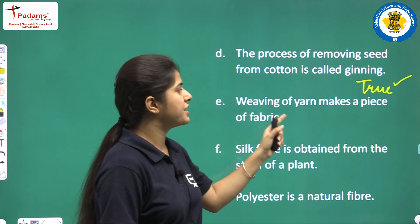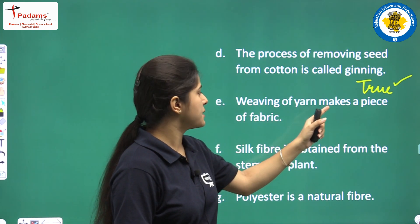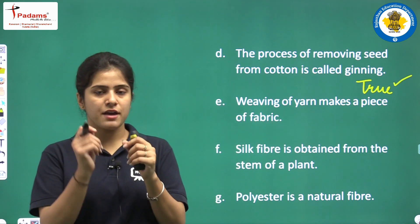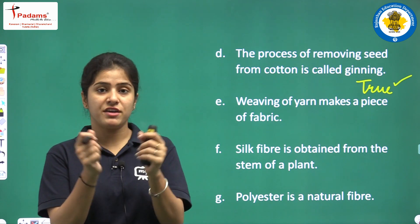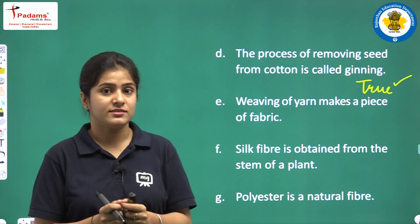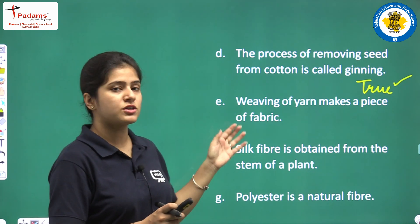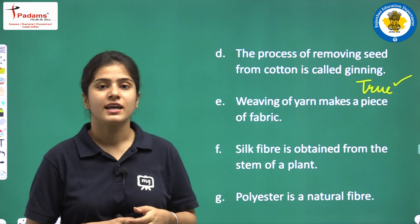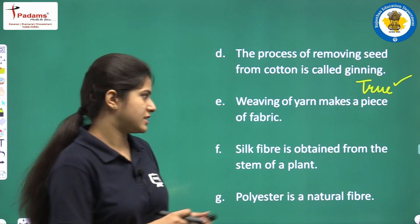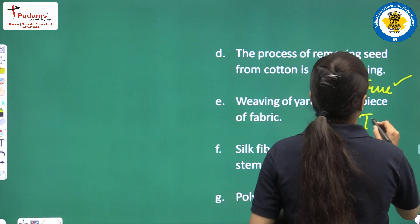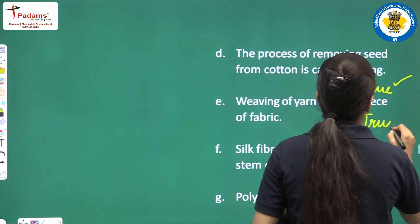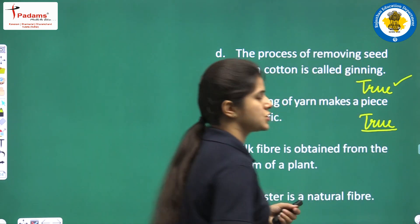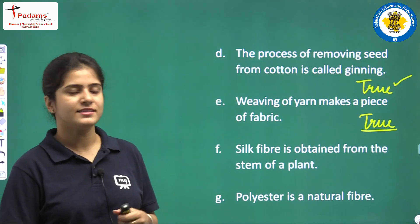Next statement: Weaving of yarn makes a piece of fabric. If we are weaving yarn, it makes a piece of fabric. Yes, this is true, because in weaving we use yarns to make a piece of fabric.